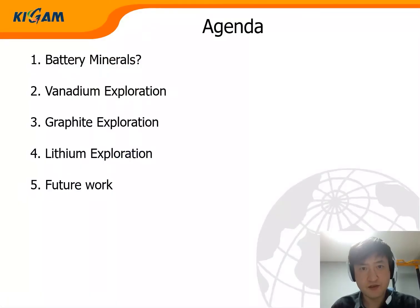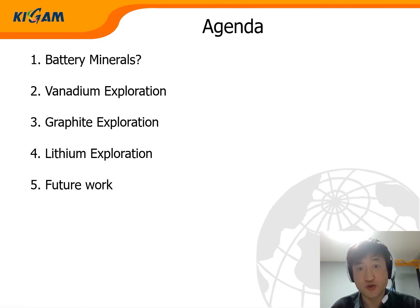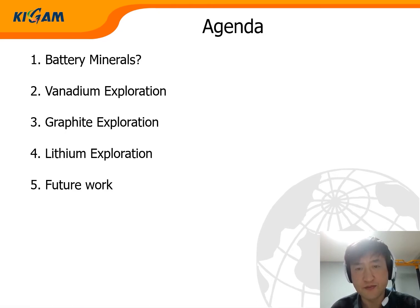First, I will introduce what the battery minerals are that we are interested in and why we should explore those. We chose three battery minerals: vanadium, graphite, and lithium. I will show the exploration procedure and research in order. After that, I will finalize my talk with the future outlook briefly.